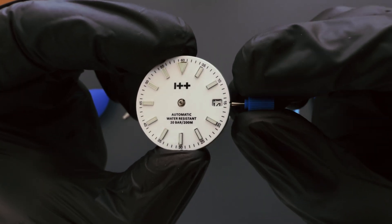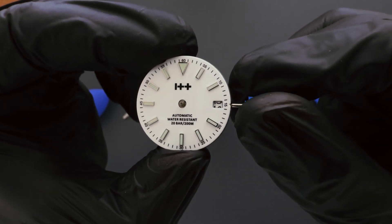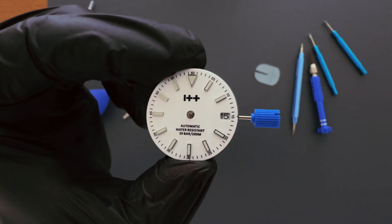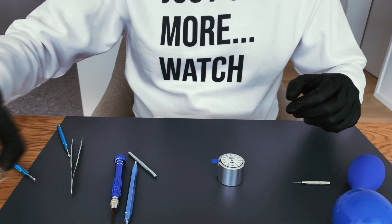Find midnight. Rotate the crown until the date jumps. That's your midnight. Now we can install hands pointing on 12 o'clock.